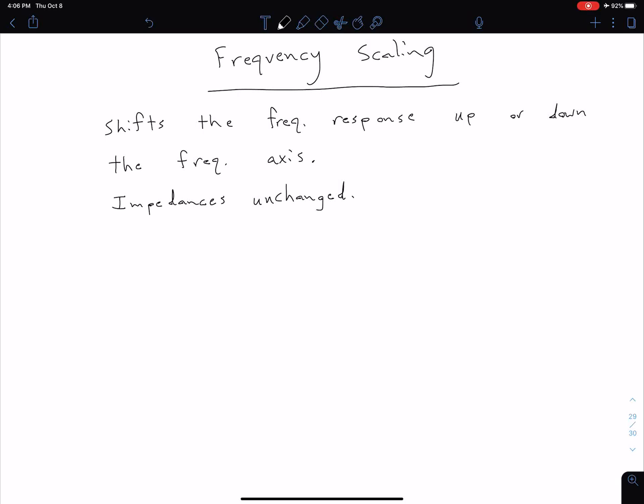The second type of scaling we're going to consider is frequency scaling. In frequency scaling, we're shifting the frequency response up and down the frequency axis. The way we've been drawing our plots, that corresponds to shifting the plot to either the left or the right as we change the frequency.